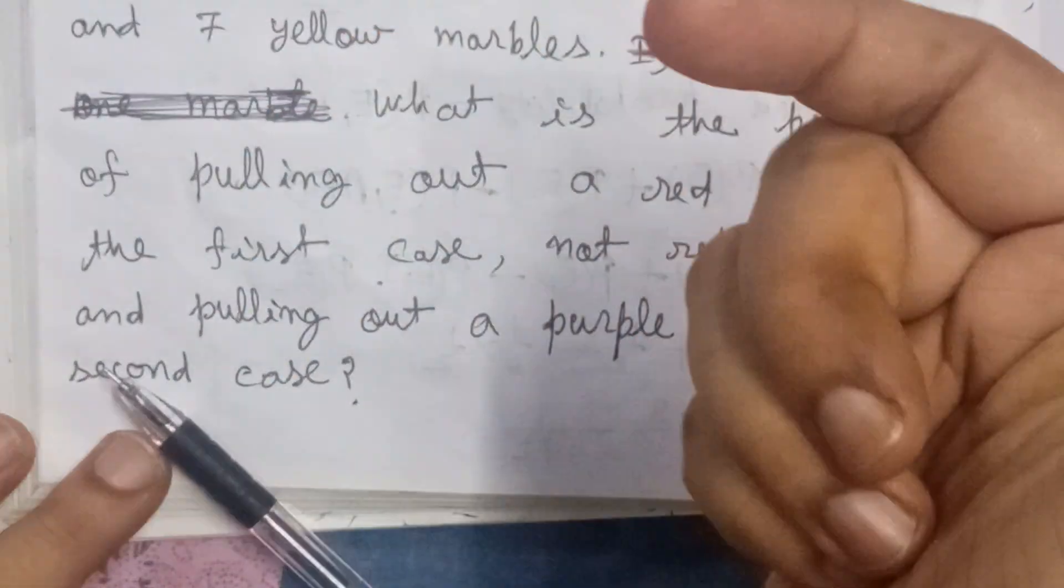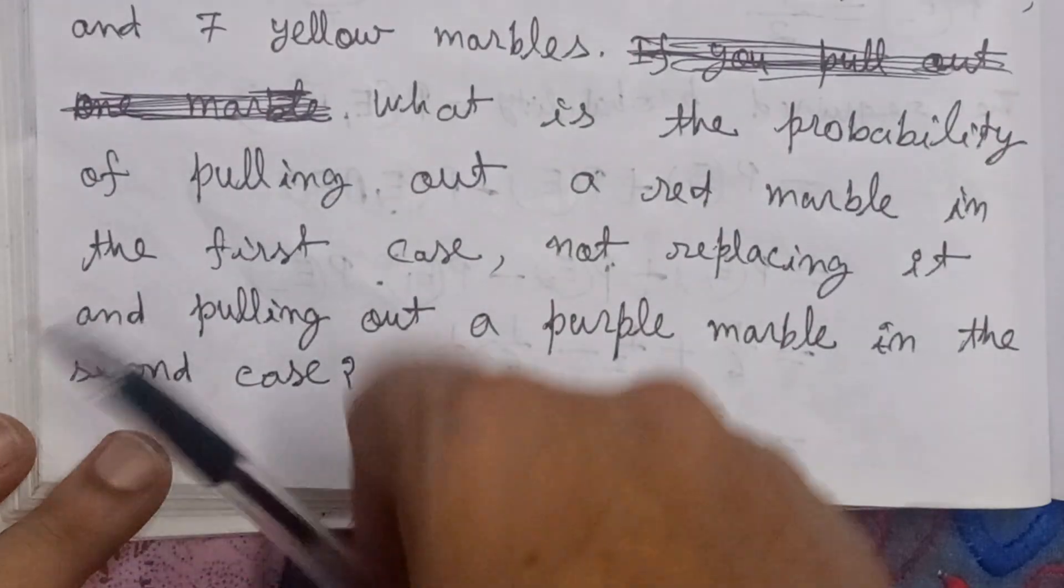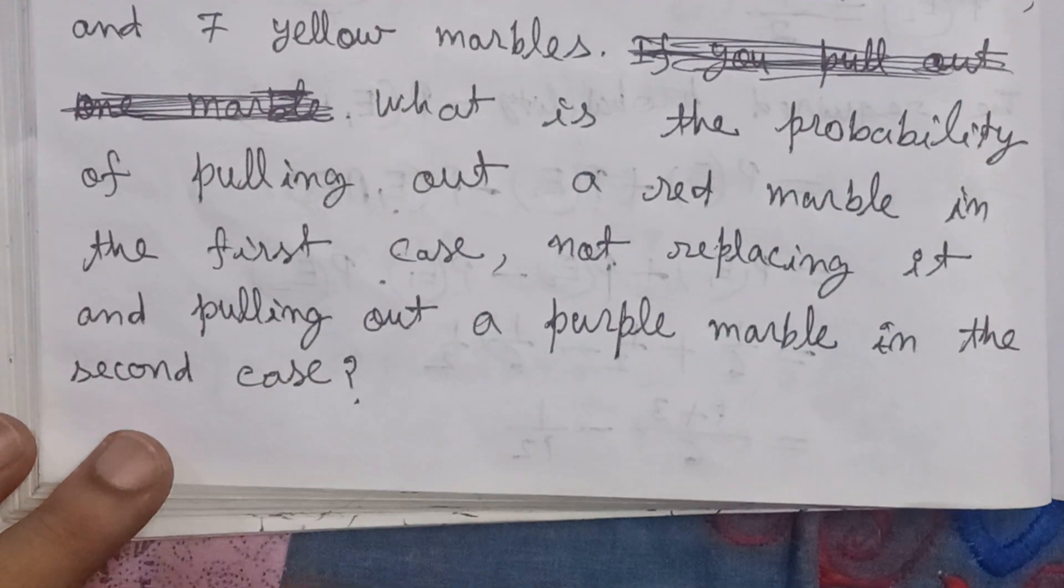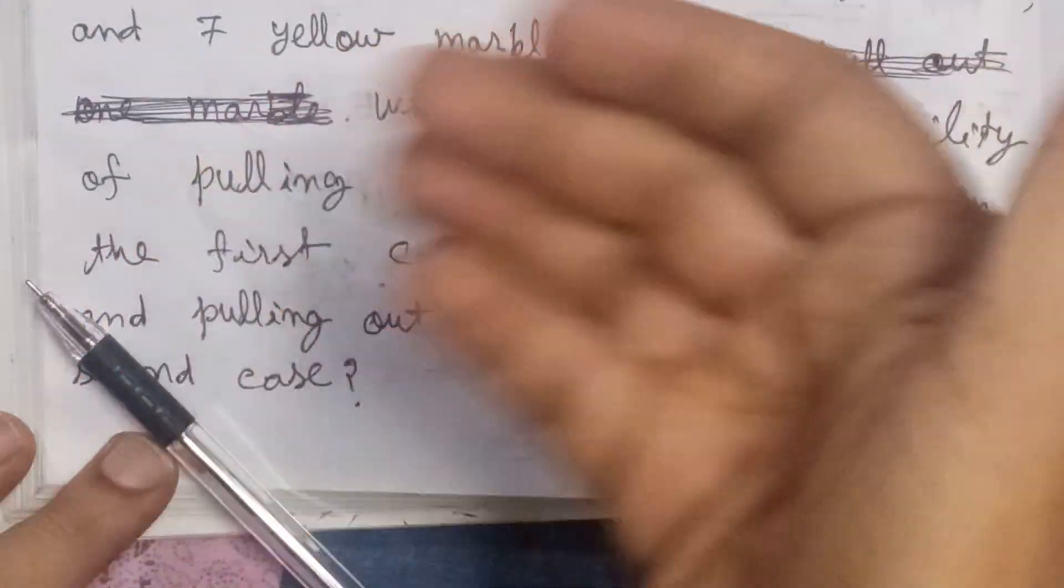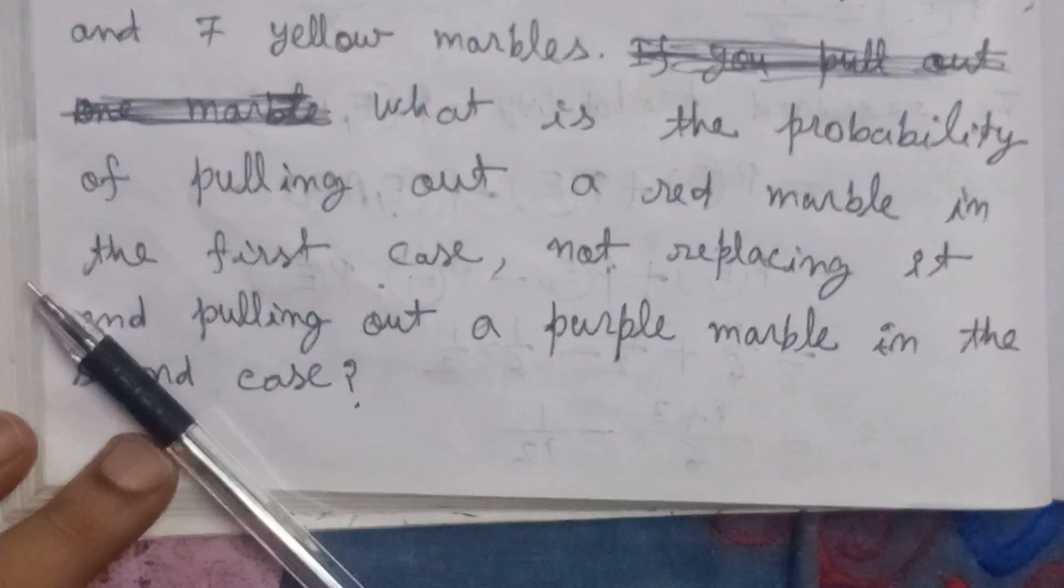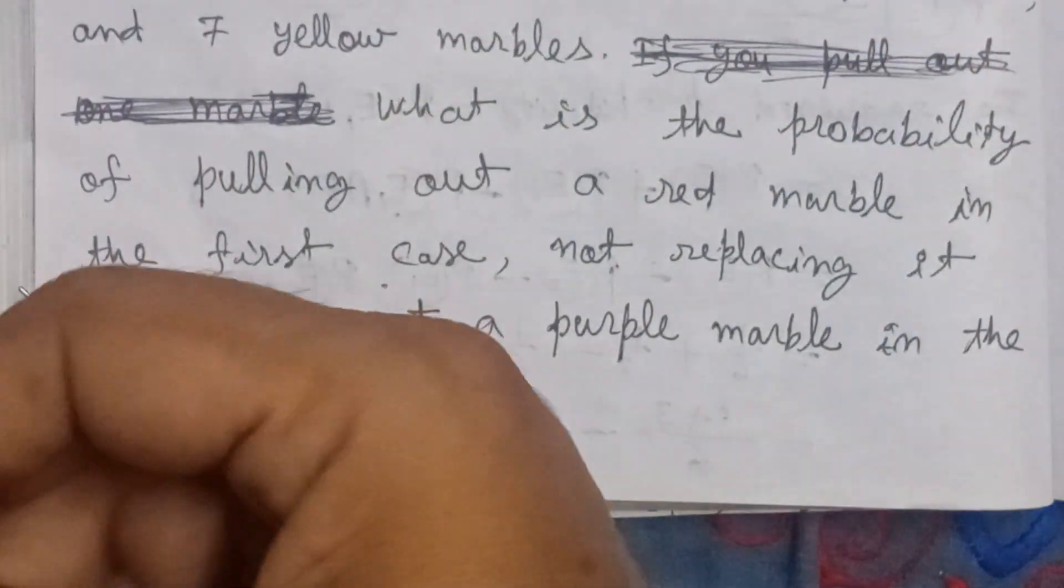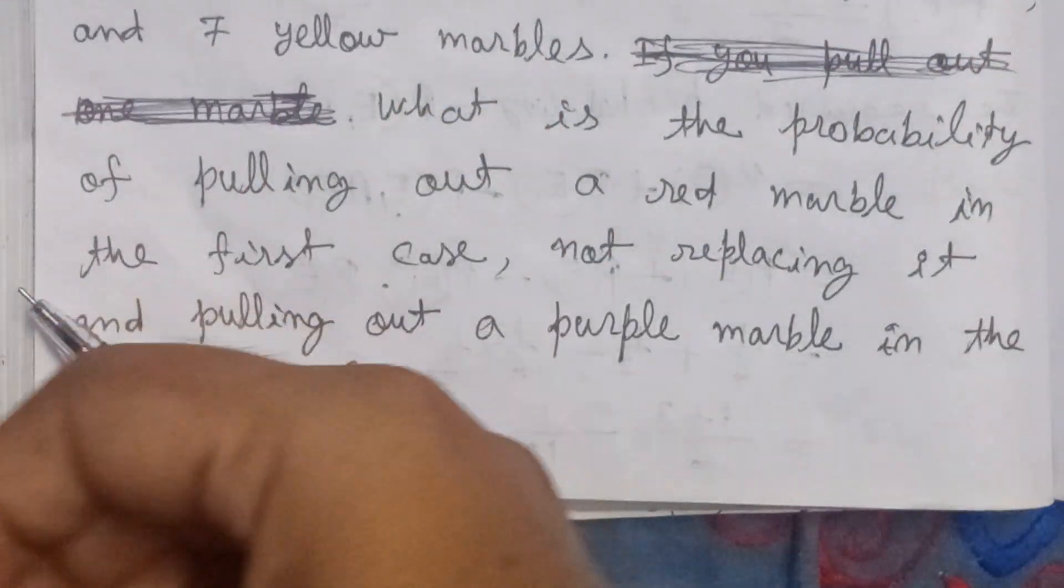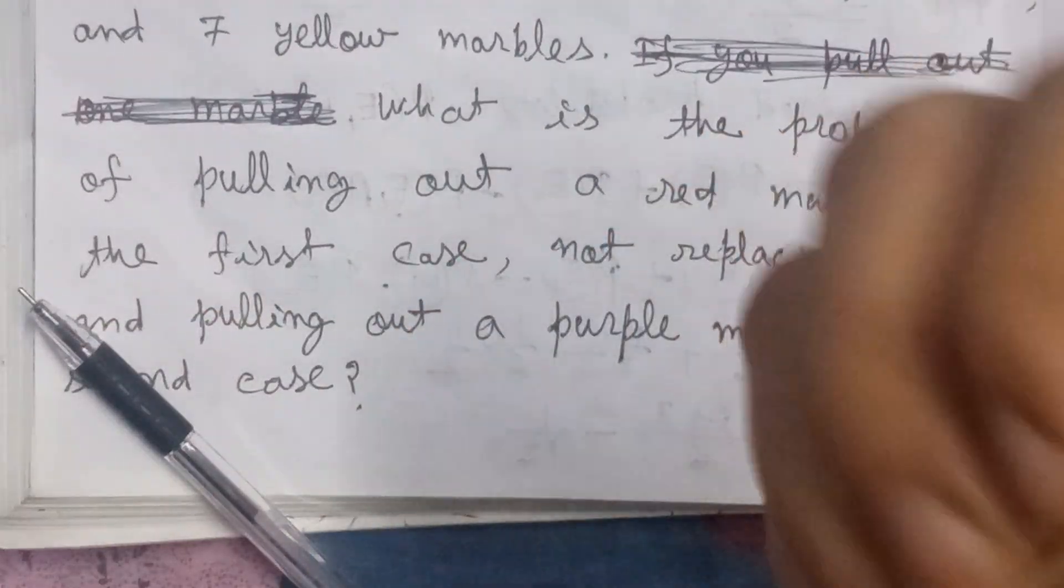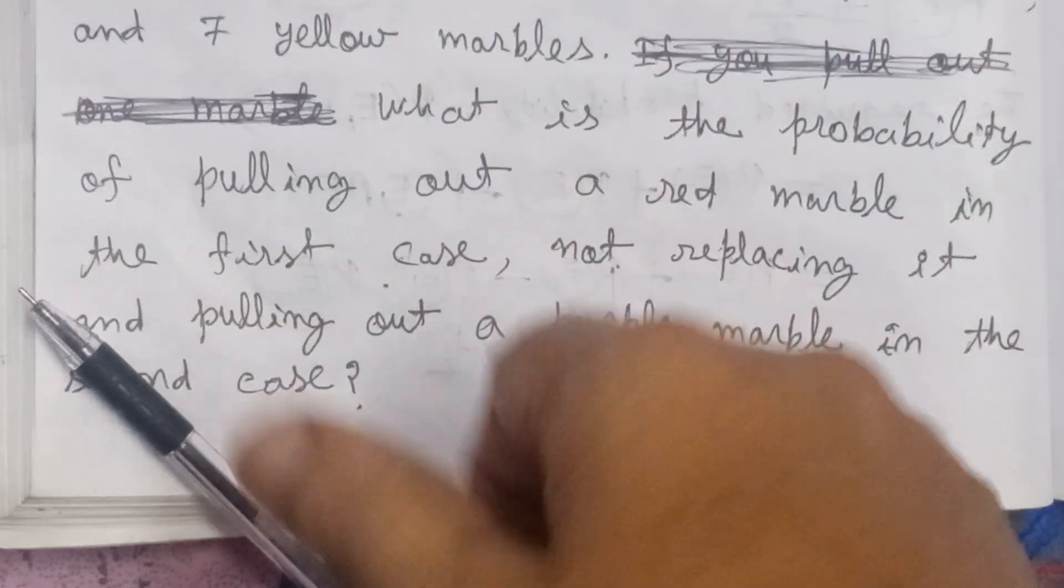we first draw a red marble from the bag, and after drawing it we don't replace it back. Then we draw a second marble from the bag, which is purple. So the two marbles we draw should be: first red, second purple, drawn one after another,